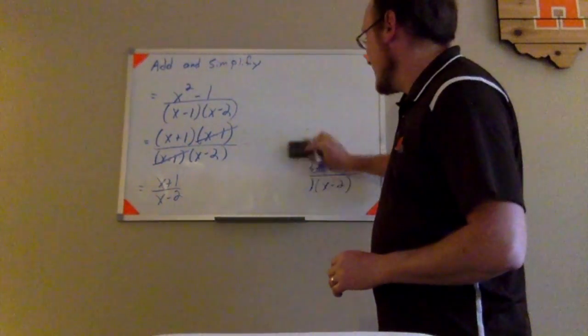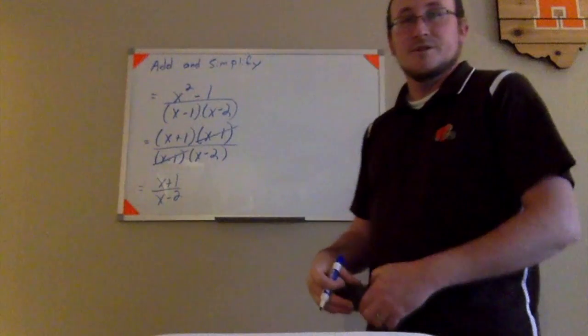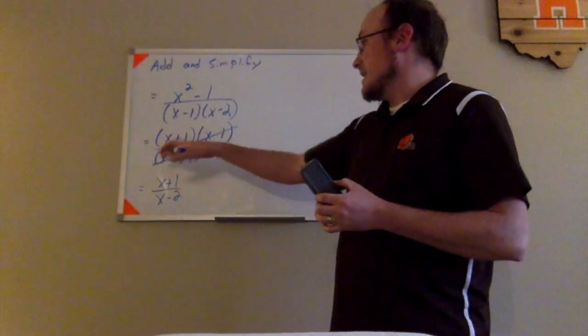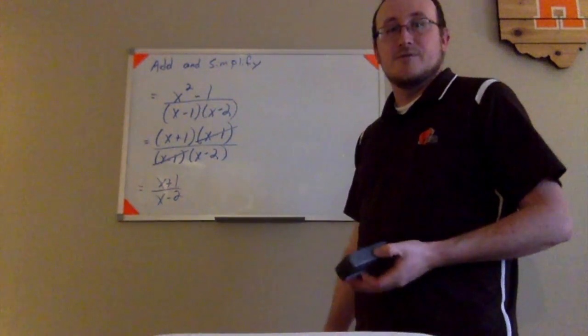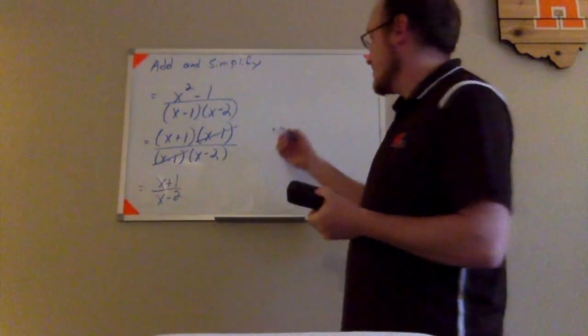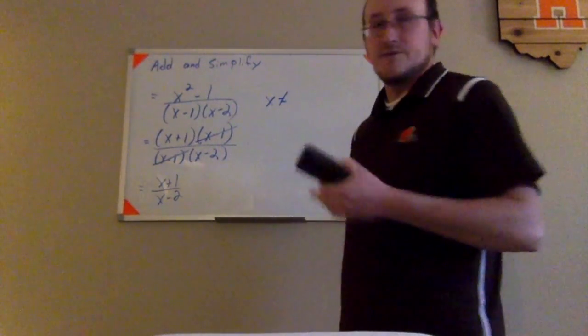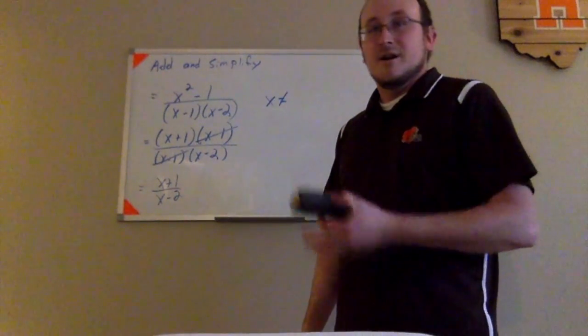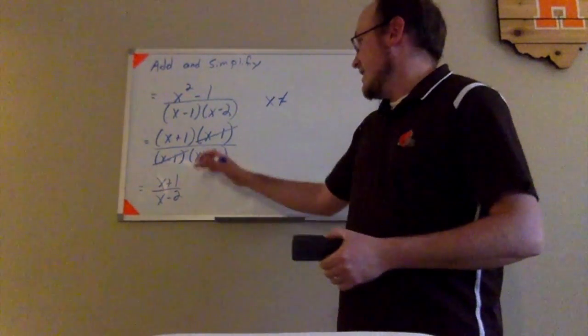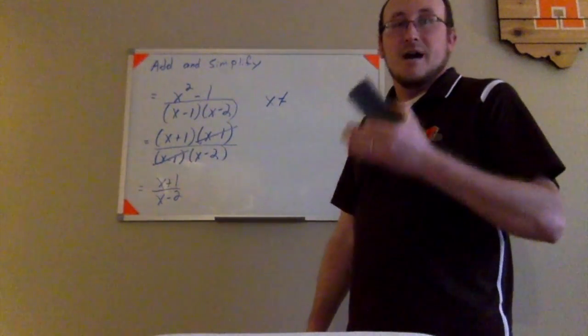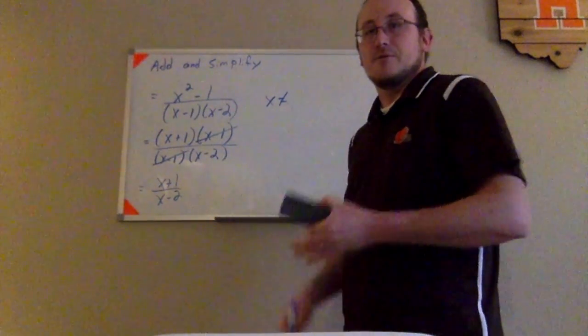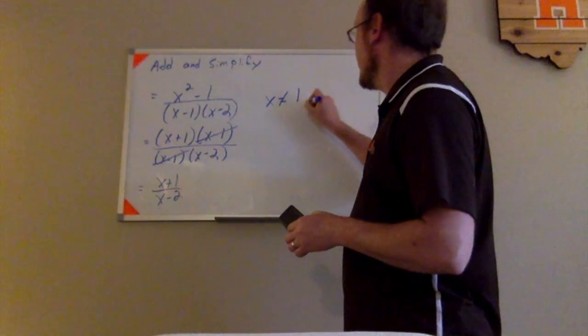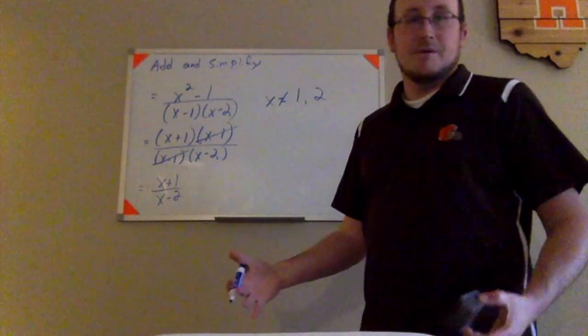The last thing that we haven't talked about here yet are the restrictions on the variables. At many points in time in these problems, I had x minus 1 and x minus 2 in the denominator, those factors. So I need to make sure that x does not equal any value that would make those factors equal to 0. So if I had an x minus 1 in my denominator, I know that x can't be positive 1. If I have an x minus 2 in my denominator, I know that x can't be positive 2. If it were either of those things, my denominator would be equal to 0. So x cannot equal 1 or 2 for my restrictions on variables.